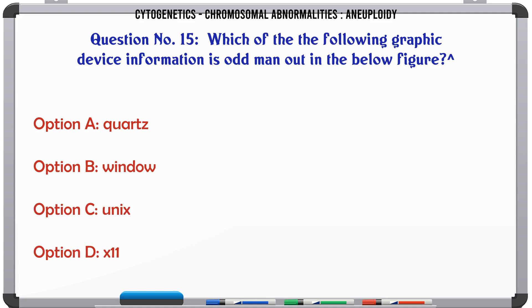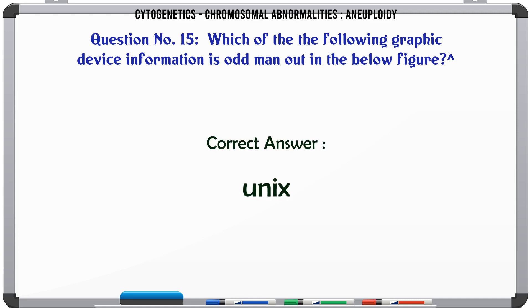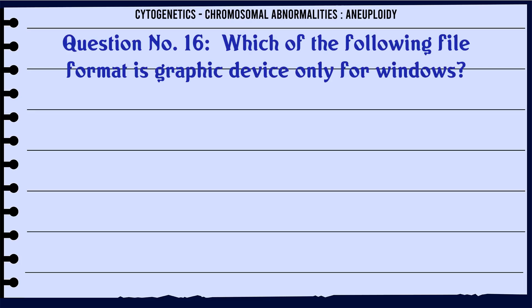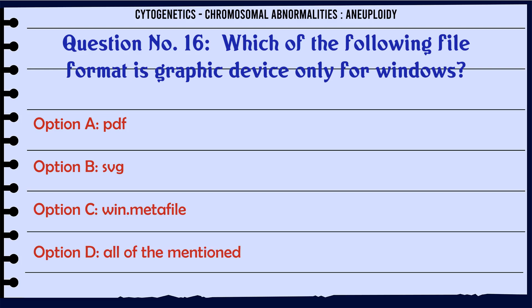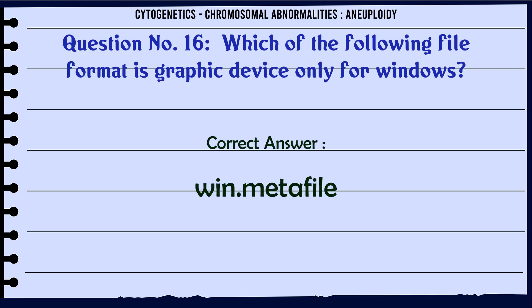Which of the following graphic device information is the odd one out? a. Quartz, b. Window, c. Unix, d. X11. The correct answer is Unix. Which of the following file formats is a graphic device only for Windows? a. PDF, b. SVG, c. Win.metafile, d. All of the mentioned. The correct answer is Win.metafile.